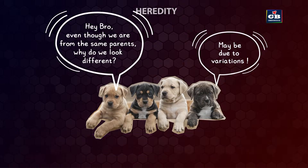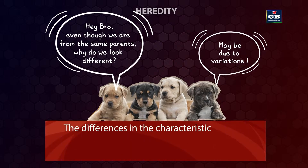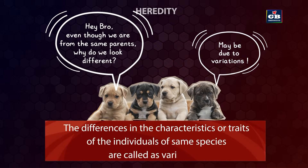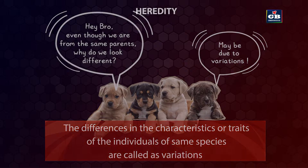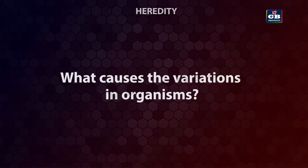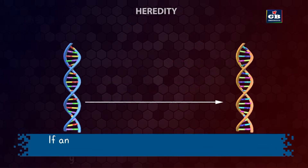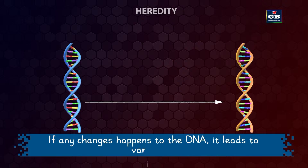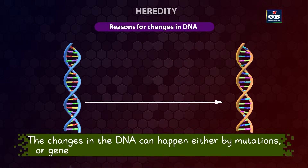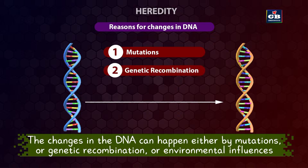Let us see the definition of variations. Variation refers to the differences in the characteristics or traits of individuals within the same species. What causes the variations in organisms? If any changes happen to the DNA, it leads to variations. The changes in the DNA can happen either by mutations, genetic recombination, or by environmental influences.